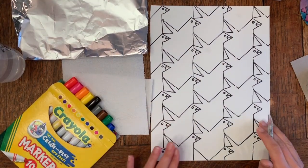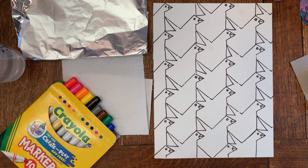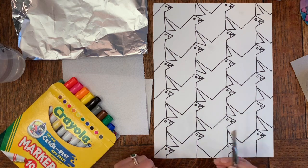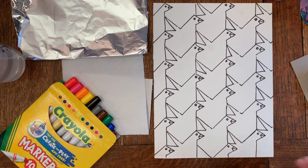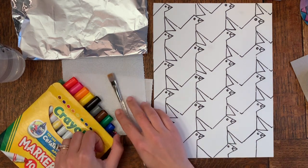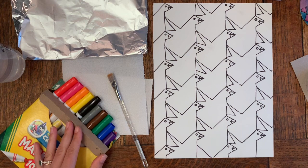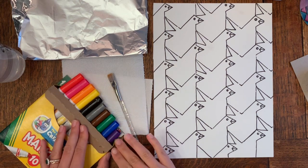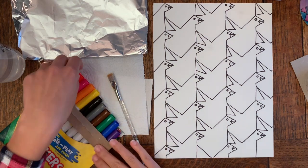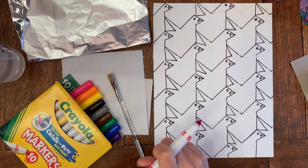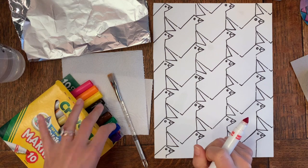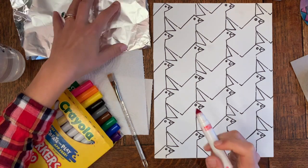Now that you have traced your tessellating shape, we get to add color. Use whatever you have at home - if you have crayons, colored pencils, markers, feel free to use those. I'm going to be showing you how to use your markers as a watercolor paint. If you have a paintbrush and a cup of water, you can make these markers turn into paint. You're also going to need a piece of foil.